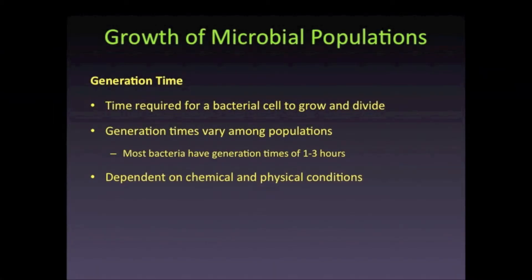The generation time, also known as the doubling time, is the amount of time required for one bacterial cell to grow and then divide. As long as the environmental conditions remain favorable and nutrients are available, bacterial cells can continue to double at a constant rate. The generation time allows a measurement of the growth rate of an organism. Generation times will vary among bacterial species and can be as short as five to ten minutes or may require days.